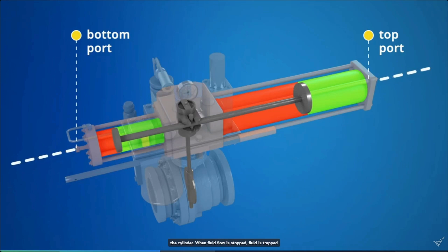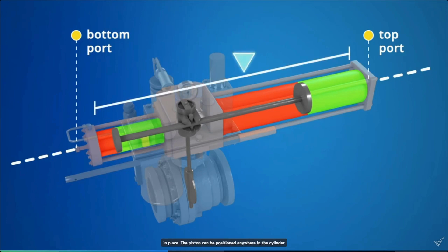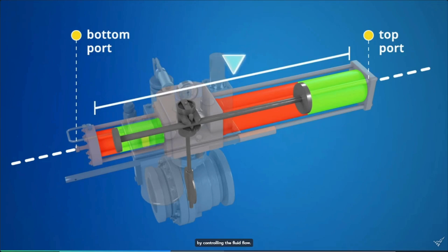When fluid flow is stopped, fluid is trapped on both sides of the piston. The trapped fluid holds the piston in place. The piston can be positioned anywhere in the cylinder by controlling the fluid flow.